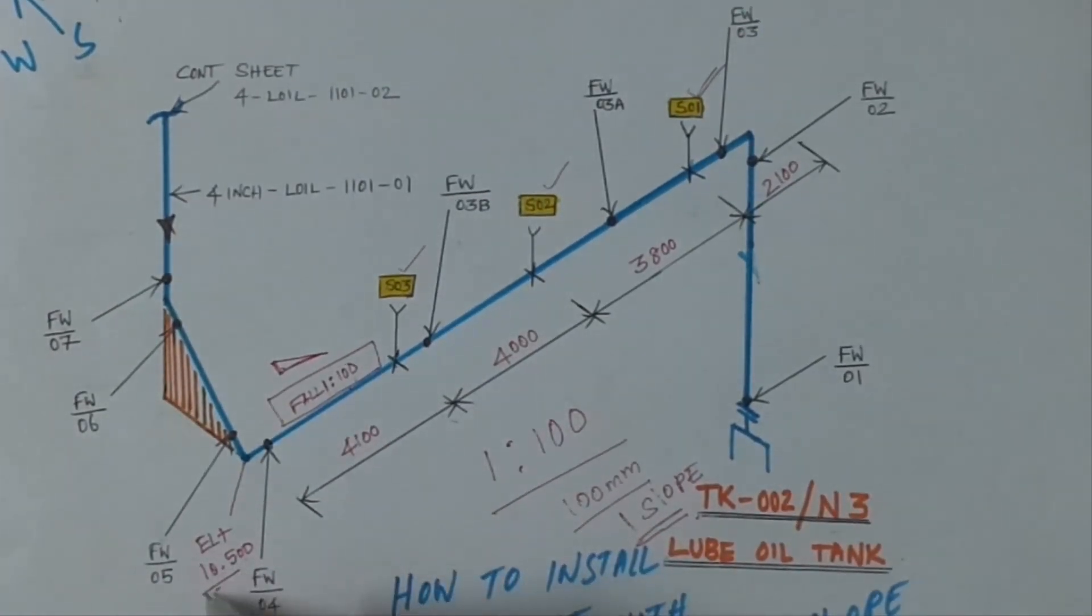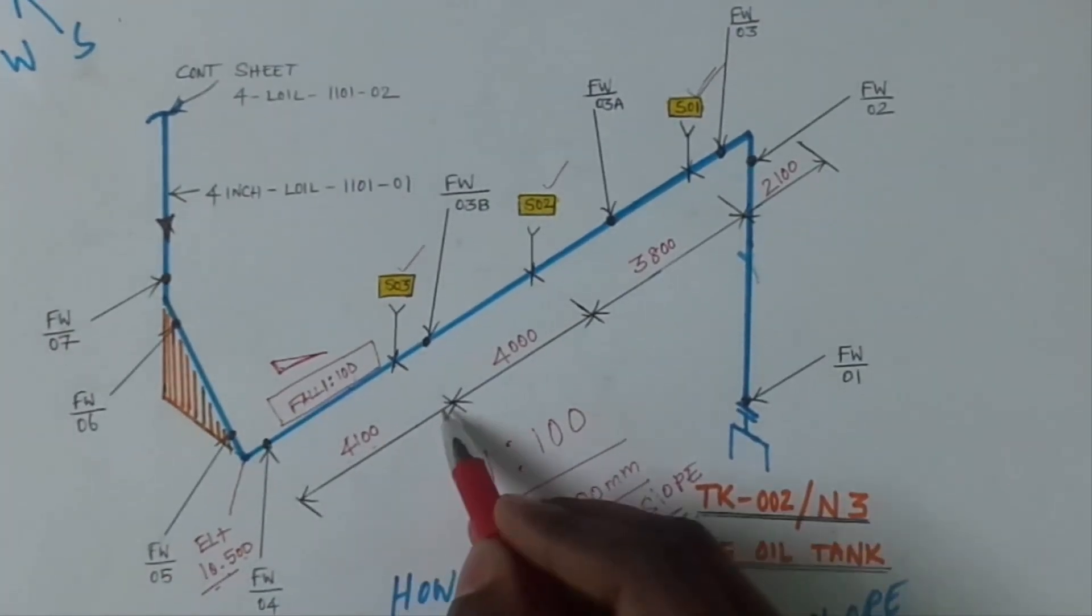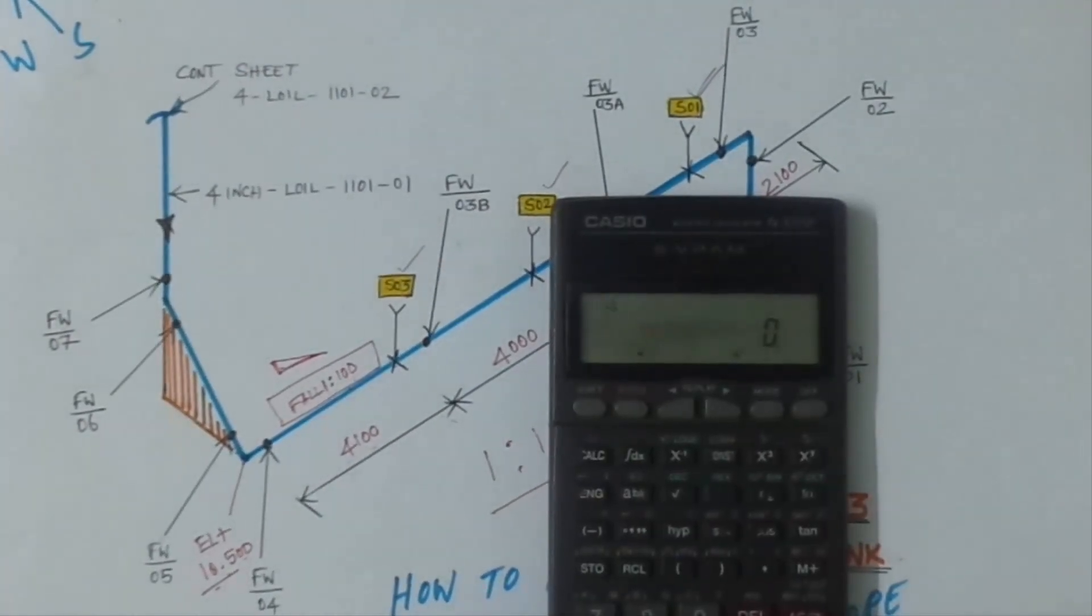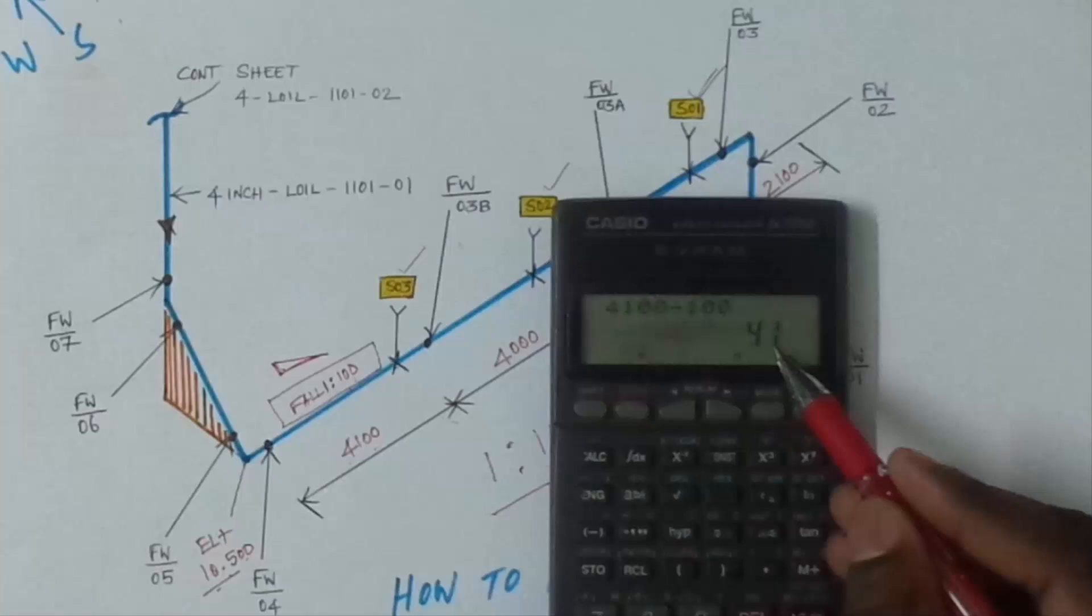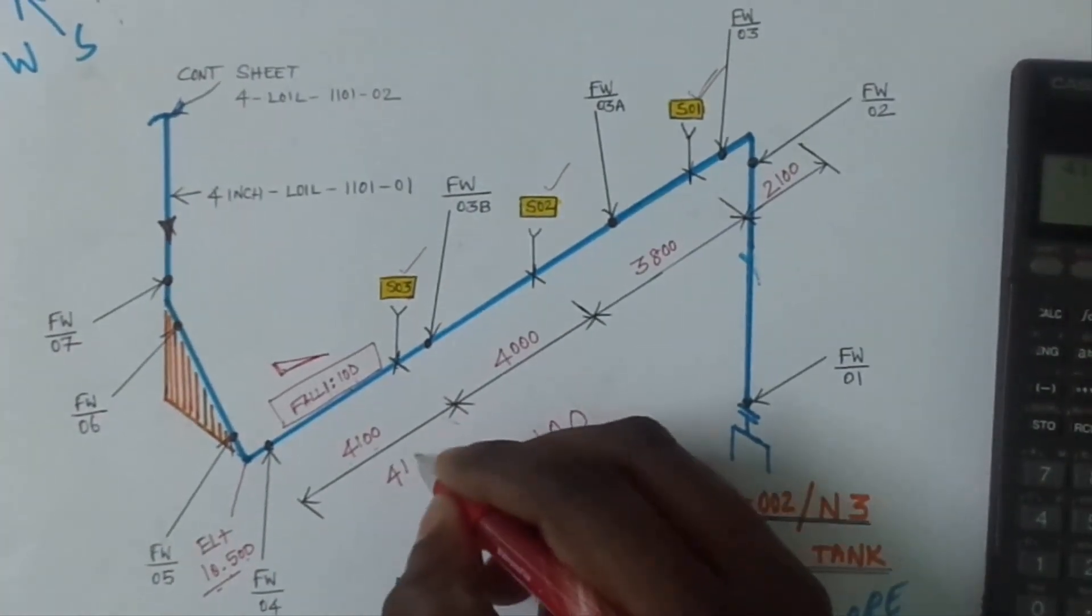Simply 4100 divided by 100, so 41 mm in between difference—41 mm.